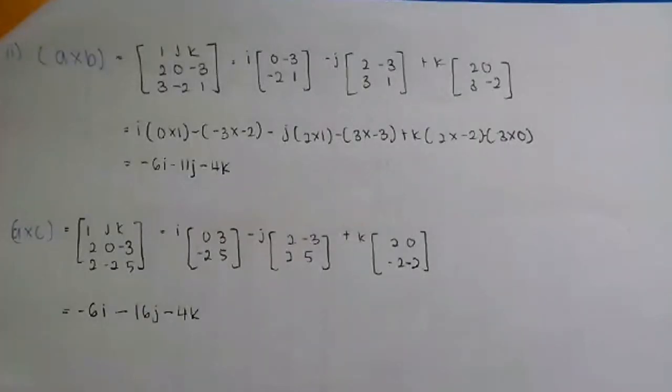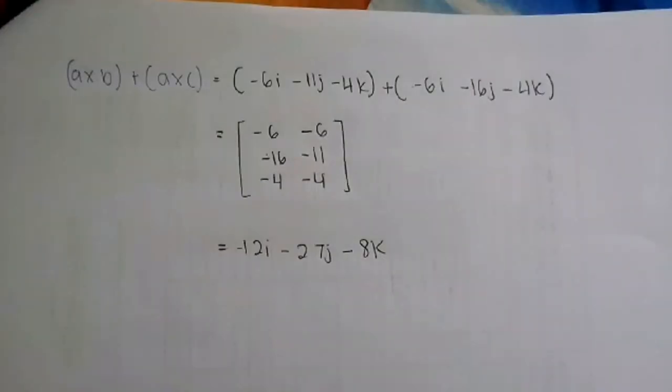A kali B. I, kita sama juga. Kita akan susun I, J, K secara laju. Selepas tu kita akan letak A. 2, 0, negatif 3. Dan third kita akan letak 3, negatif 2 dan 1. Dan kita akan selesaikan. Kita akan dapat jawapan negatif 6, tolak 11J, tolak 4K. Dan A kali C. Kita akan sama juga. Kita akan letakkan I, J, K secara laju. Dan second laju kita akan letak 2, 0, negatif 3. Dan third laju kita akan letak 2, negatif 2 dan 5. Dan jawapan akhir dia kita akan dapat negatif 6I, tolak 16J, tolak 4K. Dan jawapan akhir sekali ialah A kali B tambah A kali C. Bersama dengan negatif 6I, tolak 11J, tolak 4K, tambah dengan negatif 6I, tolak 16J, tolak 4K.